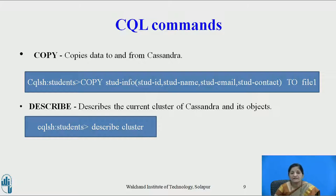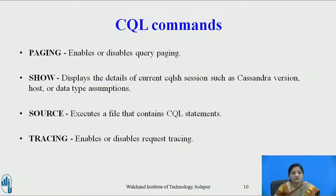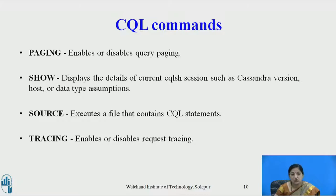Describe command is used to describe the current cluster of Cassandra and its objects. For example, describe cluster shows the existing clusters created for Cassandra. Paging — this enables or disables query paging. Show — it displays the details of current Cassandra shell session such as Cassandra version, host, or data type assumptions. Source file name — this executes a file that contains SQL statements. Tracing — it enables or disables request tracing.